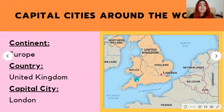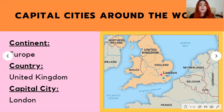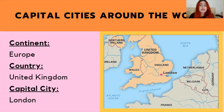Next up, we have the capital city of London, located in the United Kingdom in the European continent. It's marked by this little pink star on this map. A fun fact about London is that it is where Buckingham Palace is located, and that is where the Queen of England, Queen Elizabeth, resides.